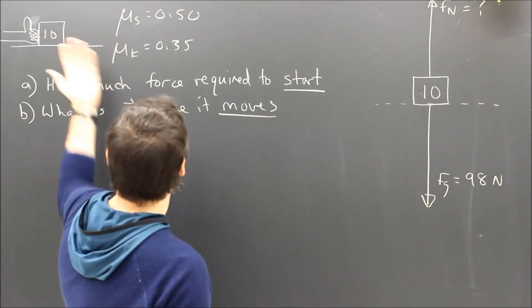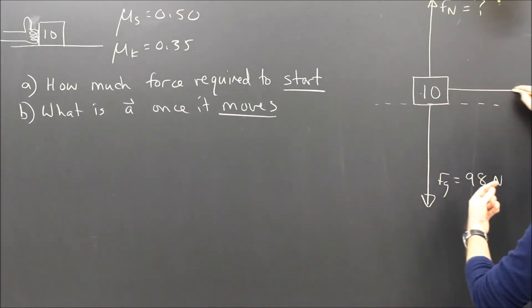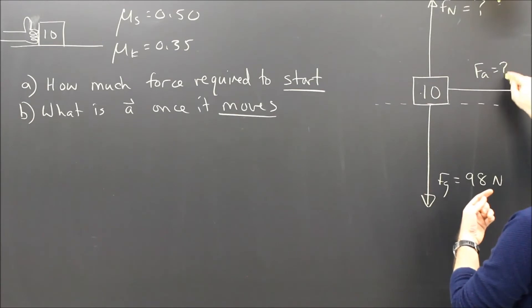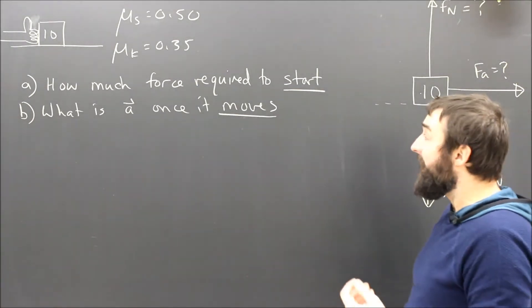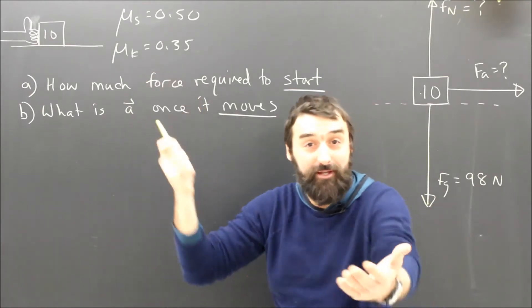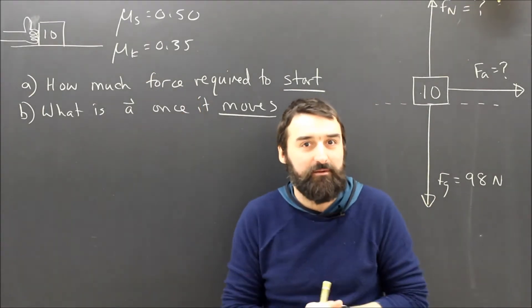What other forces are there? There's the person, me pushing it to the right. So I'm going to draw Fa over here and that's what I'm trying to find in question A. And is there friction? Of course there is because I've been given μ, so that's a good hint that there's friction.